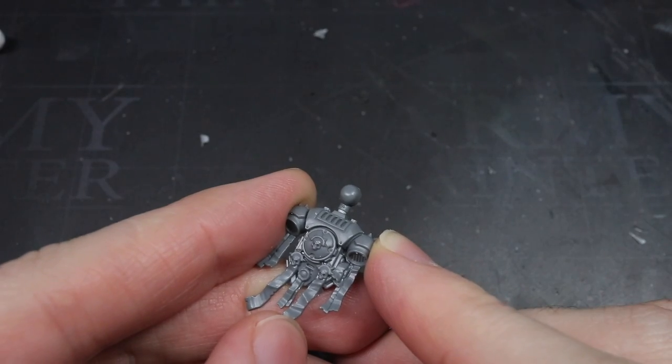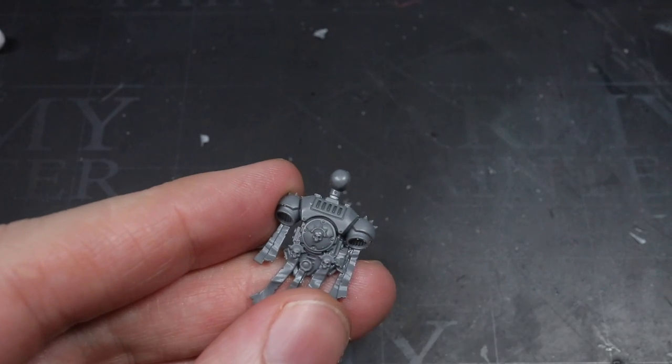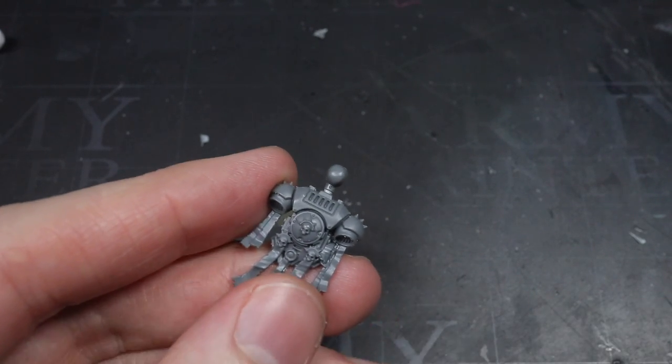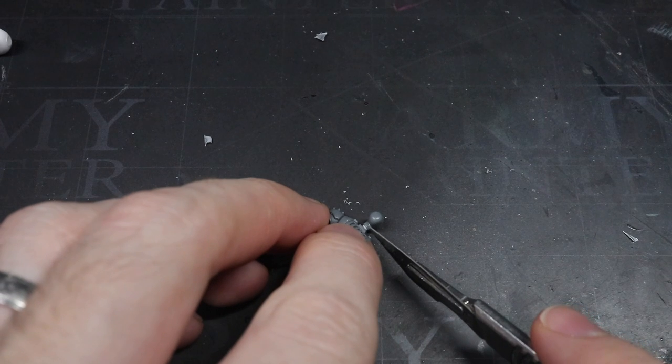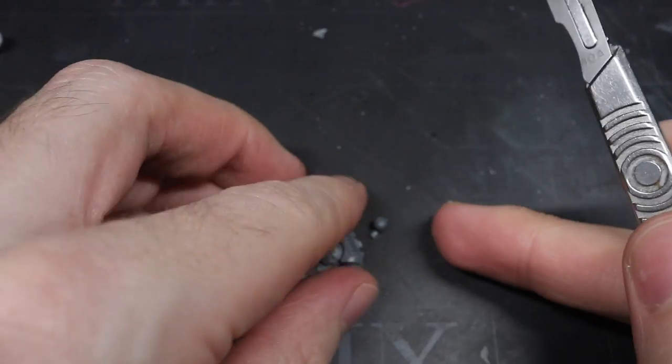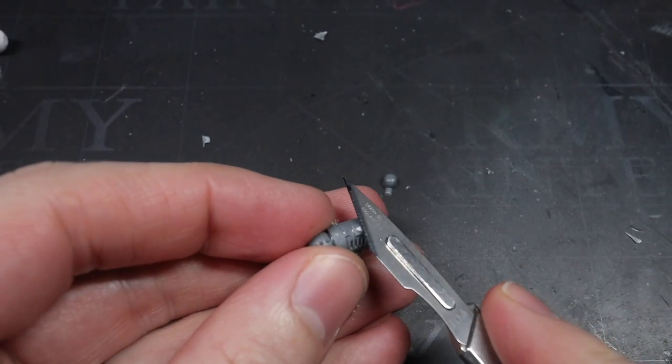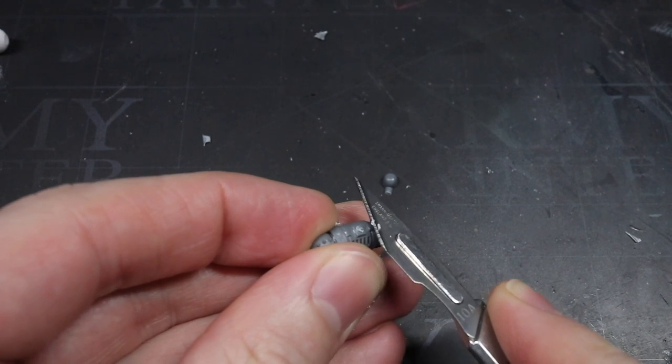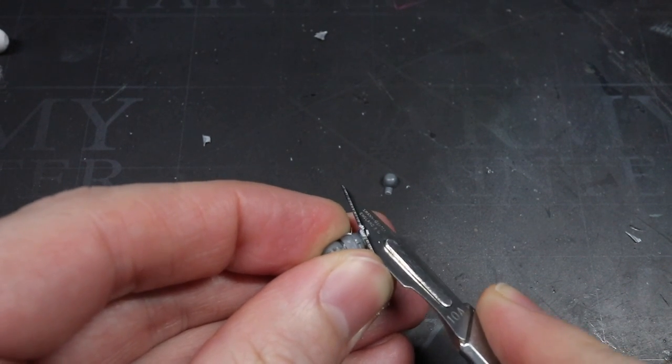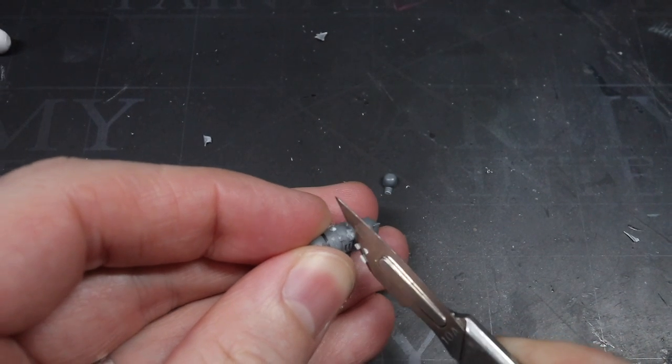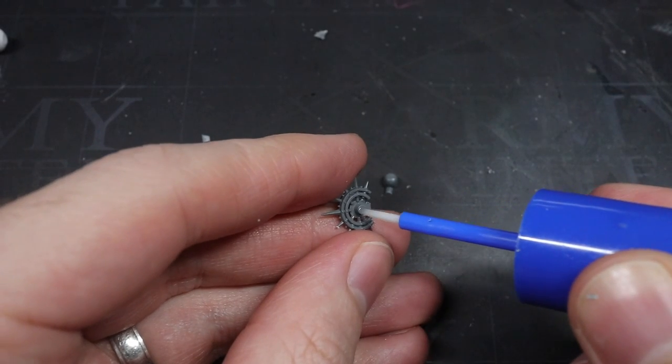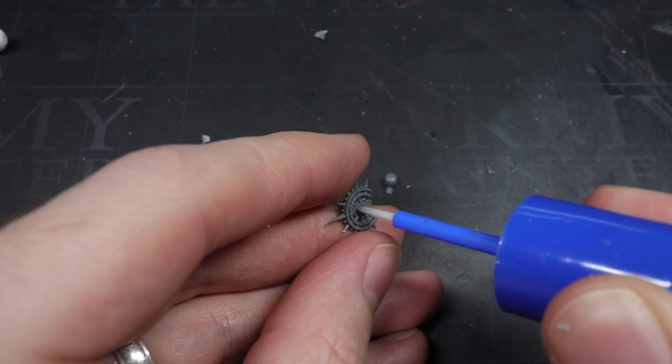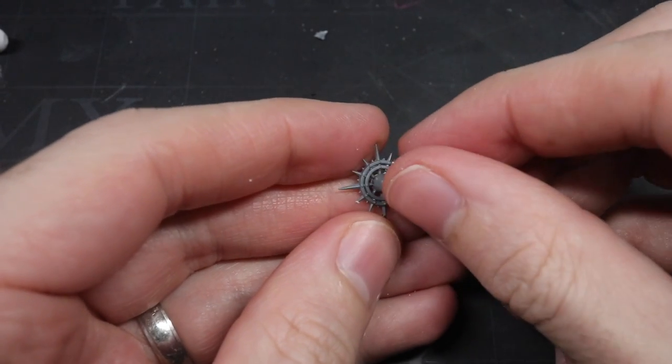The first task was to modify the Crozius Arcanum that is carried by the Chaplain. My intention here was to not only create something different from the base model but also to create something that was a little more ostentatious in order to depict his highest stature. The source of this modification came from the Chaplain's Power Pack. At the top was attached one half of the Iron Halo which I went about removing using my clippers. As I clipped this component away, I tried to retain as much of the skull half as possible. With this done, I could then glue this removed skull half to the rest of the Iron Halo which came as a separate piece already.